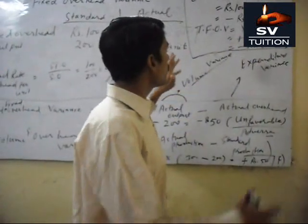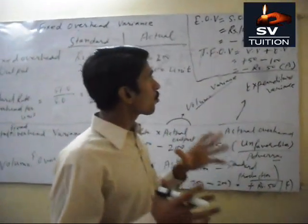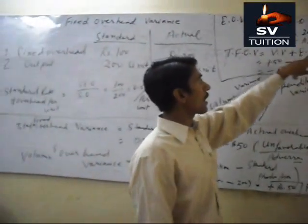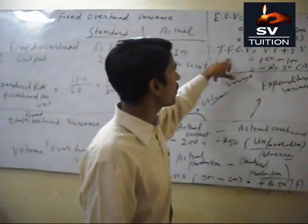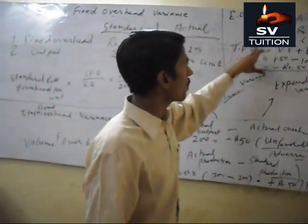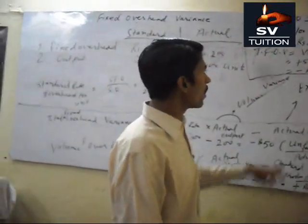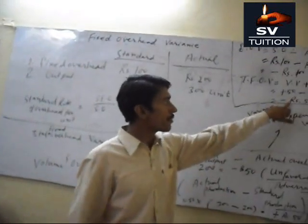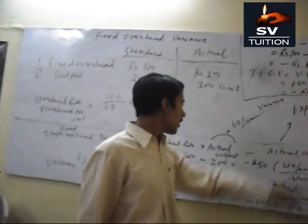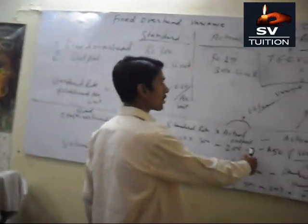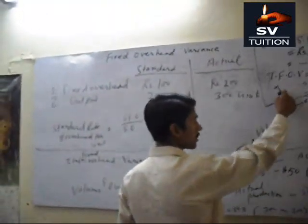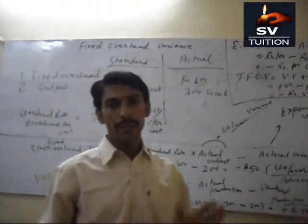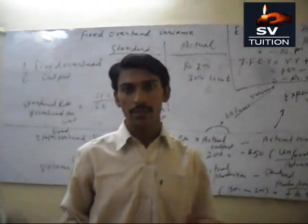If we take the total of volume variance and expenditure variance, we can calculate the fixed overhead variance: positive 50 plus negative 100 equals negative 50, which verifies our total fixed overhead variance. Thank you very much.